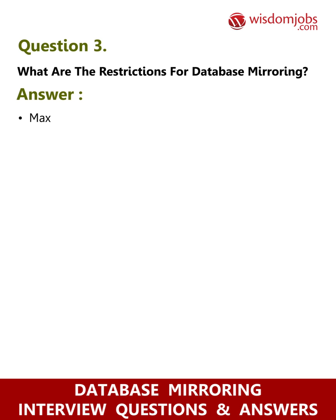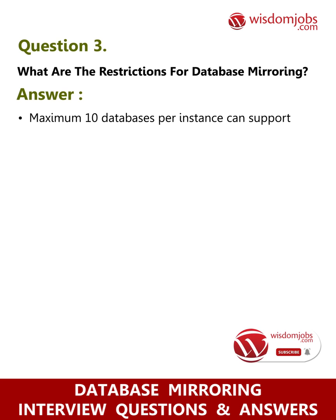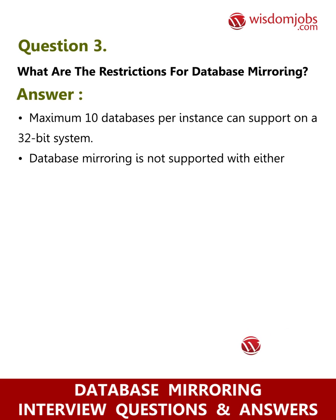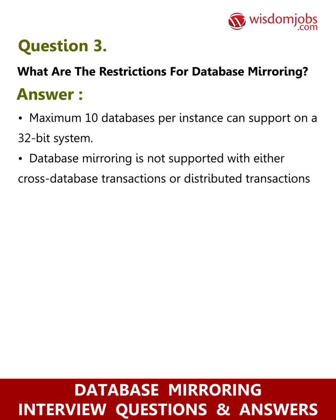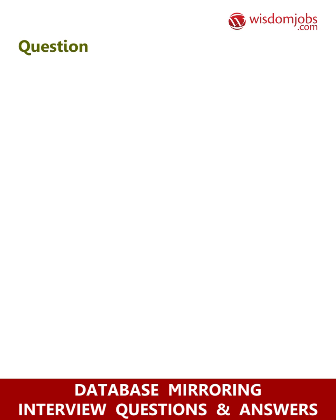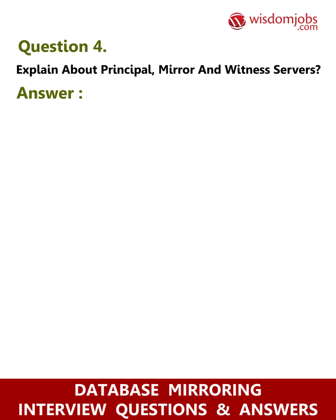Question 3: What are the restrictions for database mirroring? Answer: A maximum of 10 databases per instance can be supported on a 32-bit system. Database mirroring is not supported with either cross-database transactions or distributed transactions.